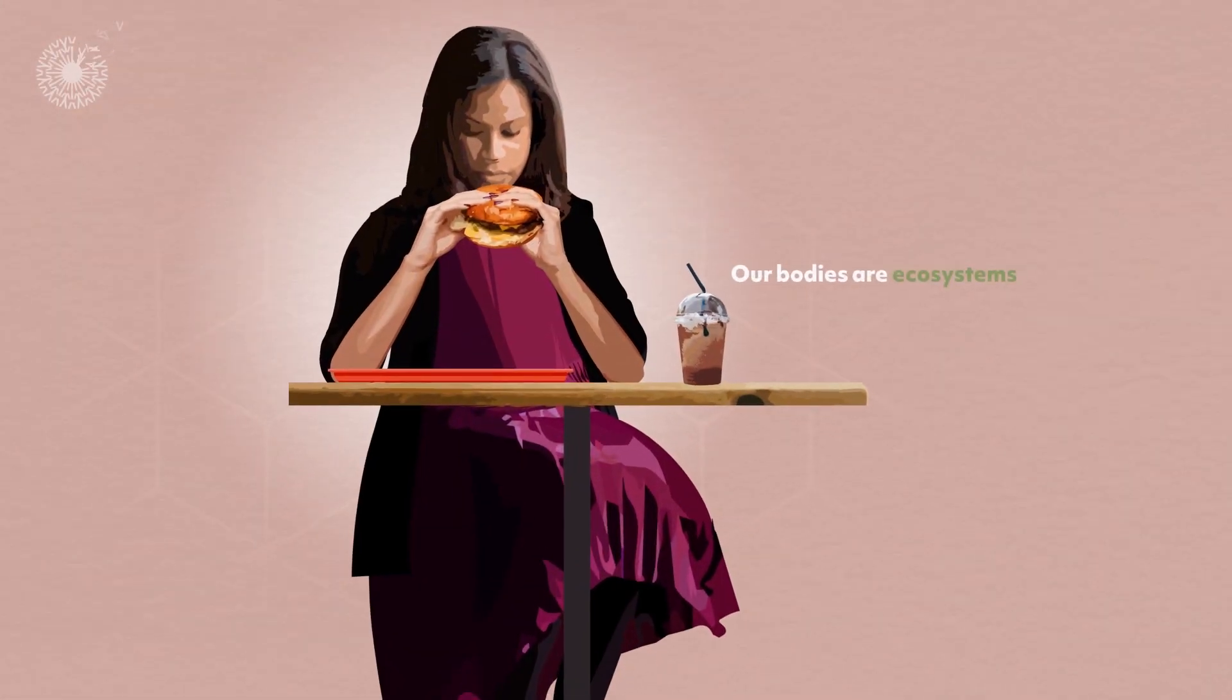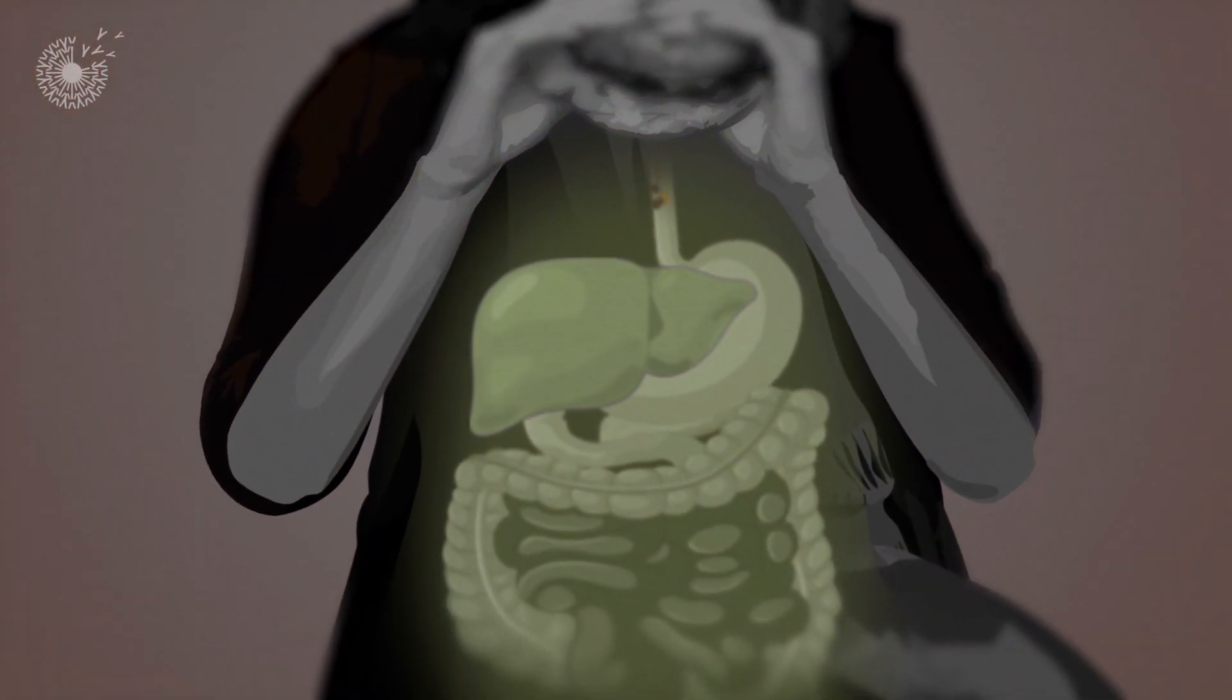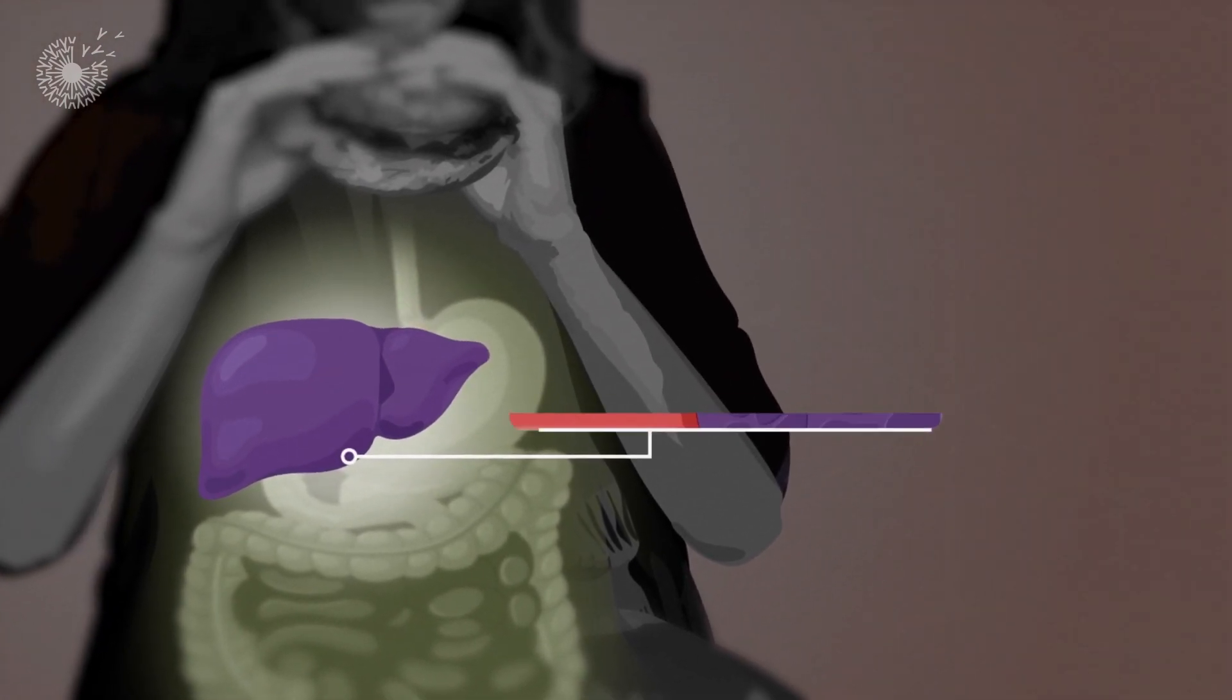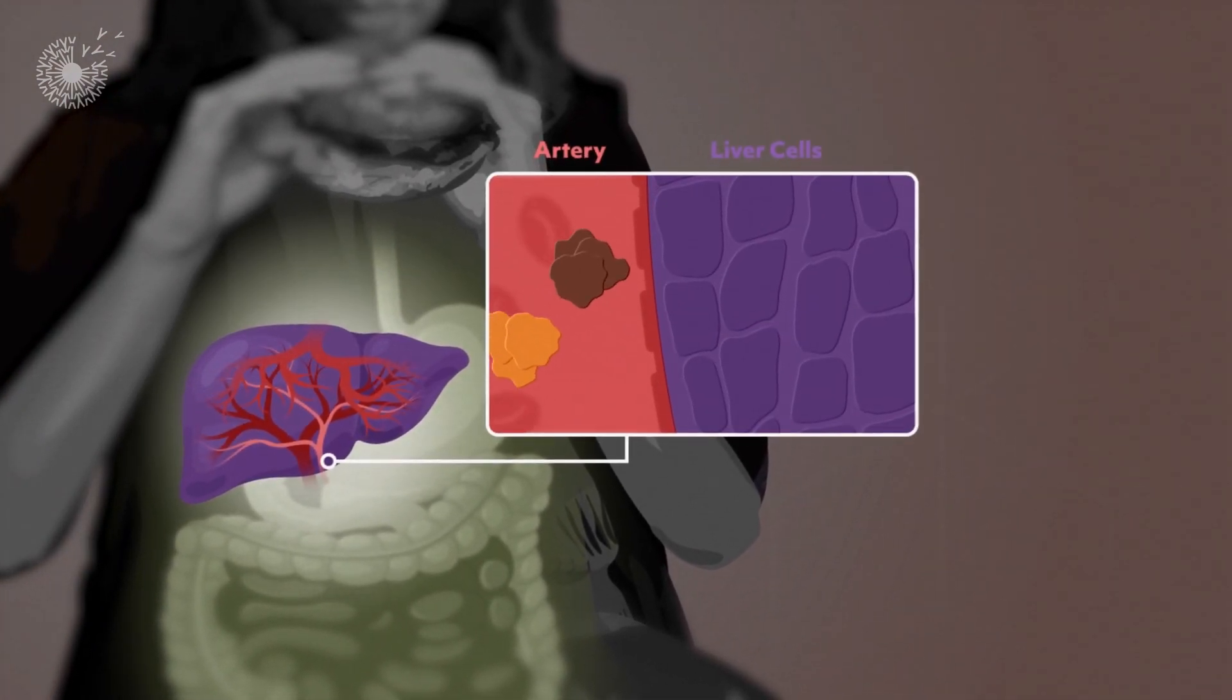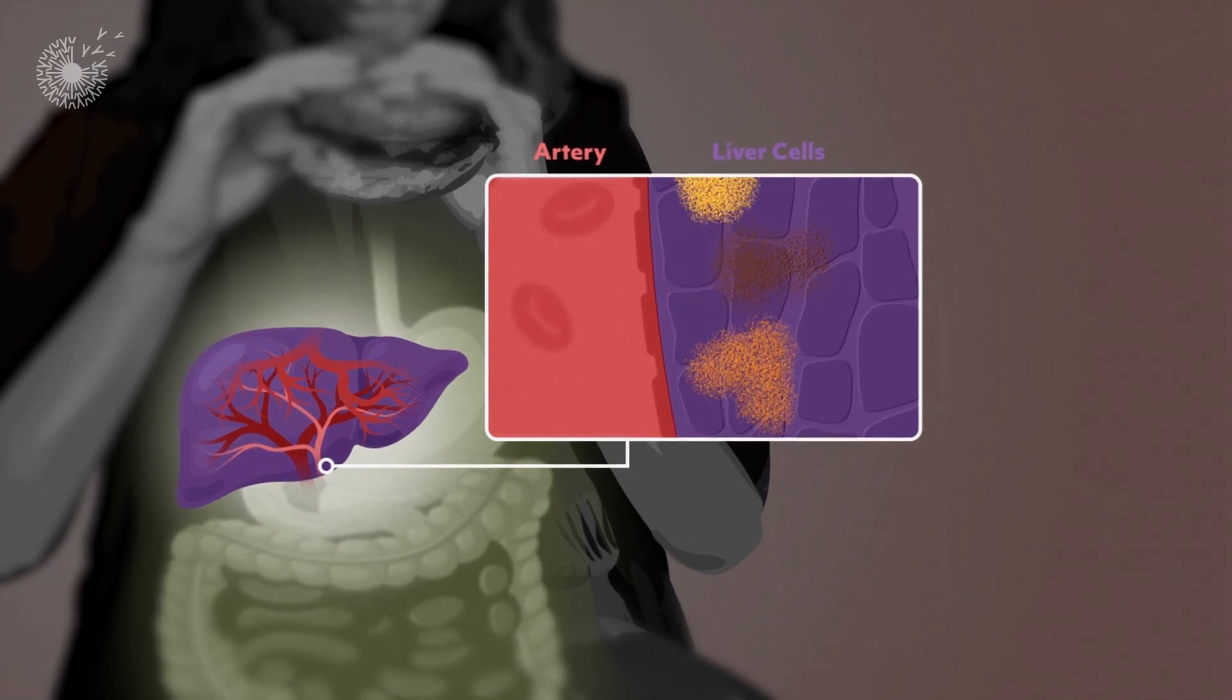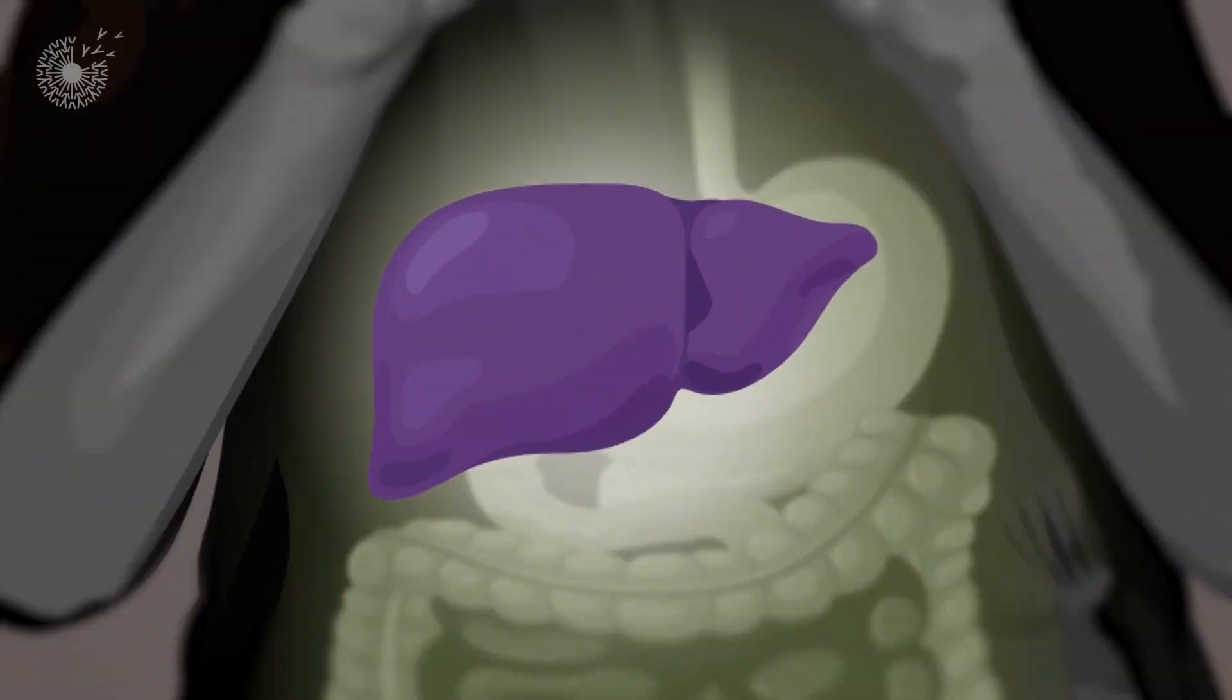Our bodies are ecosystems, and our livers keep them clean by checking out everything that's made it into our bloodstreams and breaking it down for use or removal.